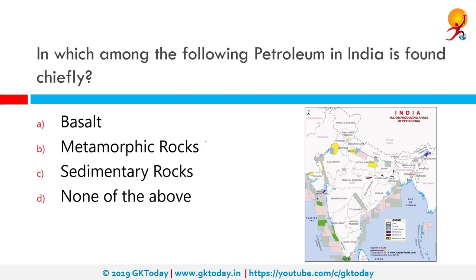In which among the following is petroleum in India found chiefly? The correct answer is sedimentary rocks. On the map you'll see color codes for petroleum mining sites within India — some onshore, some offshore. Petroleum is mostly found under sedimentary rocks because sedimentary rocks are younger than 600 million years and have fossils trapped under them which have formed petroleum and other related substances. Petroleum is a fossil fuel.